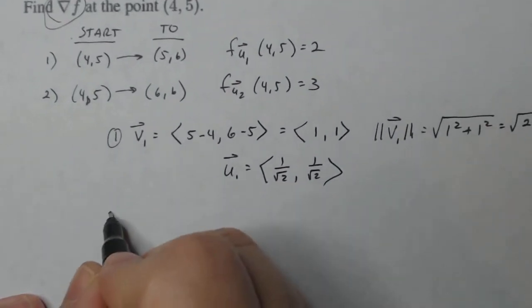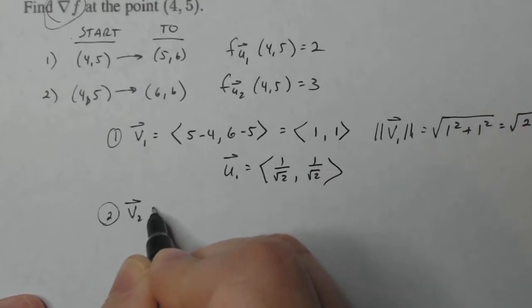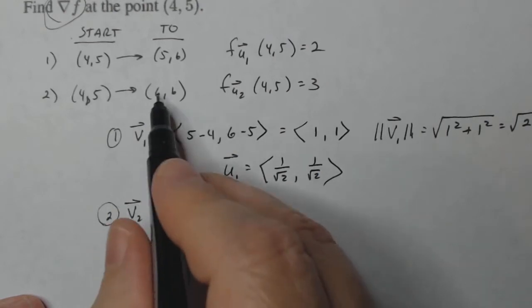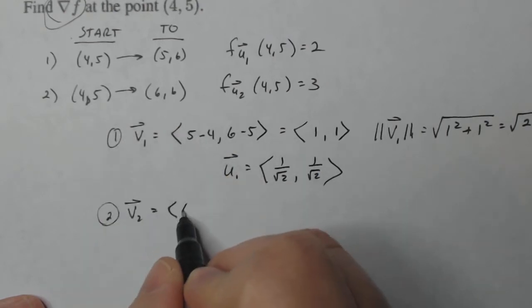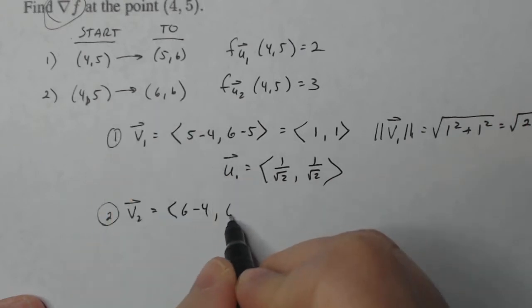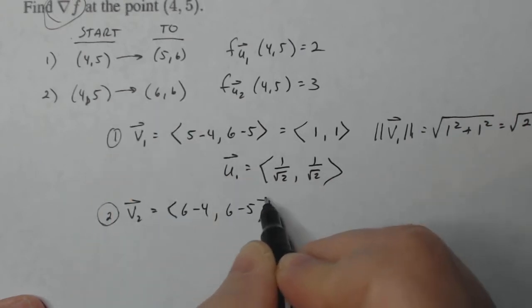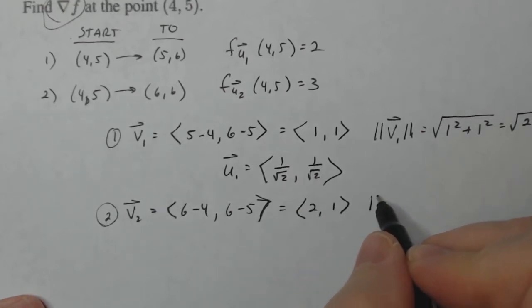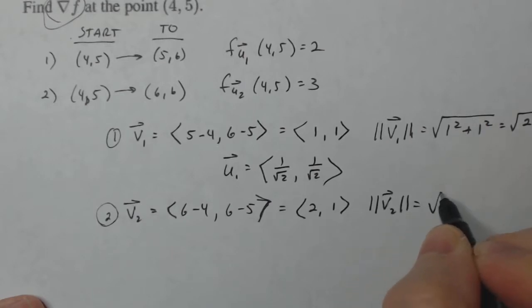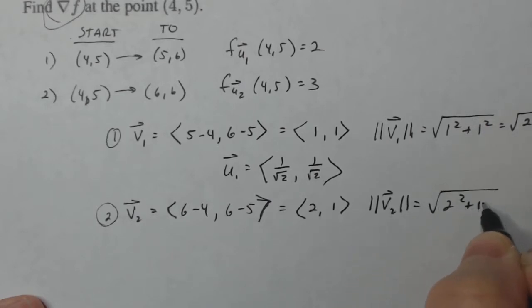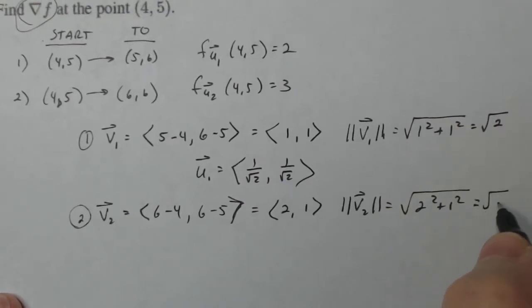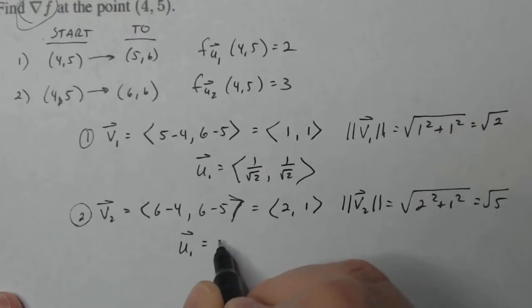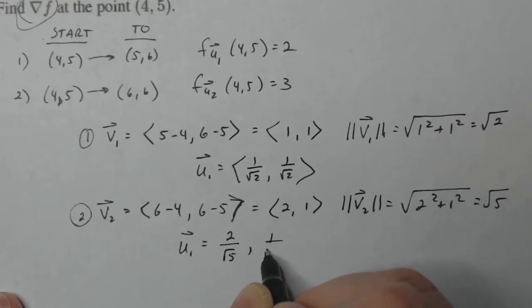For the second direction, I go from (4, 5) to (6, 6). My change in x is 6 minus 4, and my change in y is 6 minus 5, giving me vector (2, 1). The magnitude of V₂ is √(4 + 1) = √5. So my unit vector in that direction is (2/√5, 1/√5).